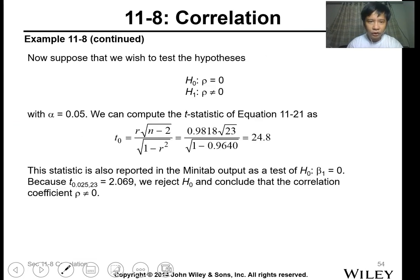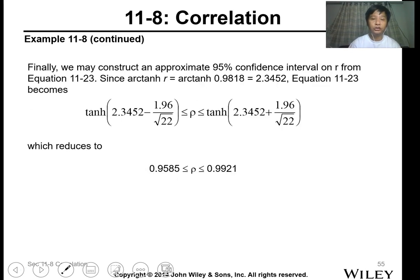Now let's have the hypothesis testing. The hypothesis states that the correlation rho is equal to 0, meaning there's no linear correlation, or no linear relationship between the data. And our alternative is that there's a linear relationship. And from this one, we computed the T calculated or T naught, 24.8. Comparing to your T table value at alpha 0.025, because 0.05 is our alpha, and 23 degrees of freedom. So look at your T table, this is the alpha, this is the degrees of freedom. So 2.0, the calculated is larger, we reject the null hypothesis, meaning there's a linear correlation.